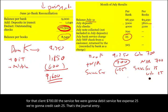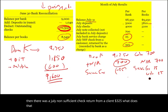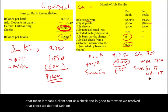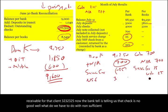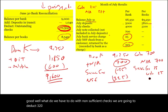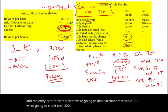Then there was a July non-sufficient check returned from a client for $325. A client sent us a check and in good faith we debited cash $325 and credited accounts receivable $325. Now the bank is telling us that check is no good. We deduct $325 from our book balance, and the journal entry to fix this is to debit accounts receivable $325 and credit cash $325 — simply reversing the original entry.